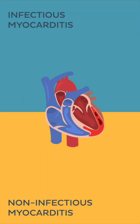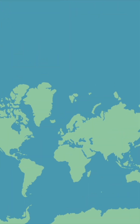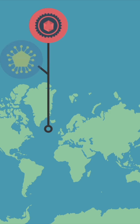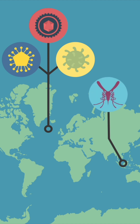In most cases, myocarditis is caused by an infection which is in turn caused by common pathogens like viruses or bacteria. In highly industrialised countries, the most common viruses are coxsackievirus, adenovirus and herpesvirus. In South East Asia, dengue virus is the most common virus.